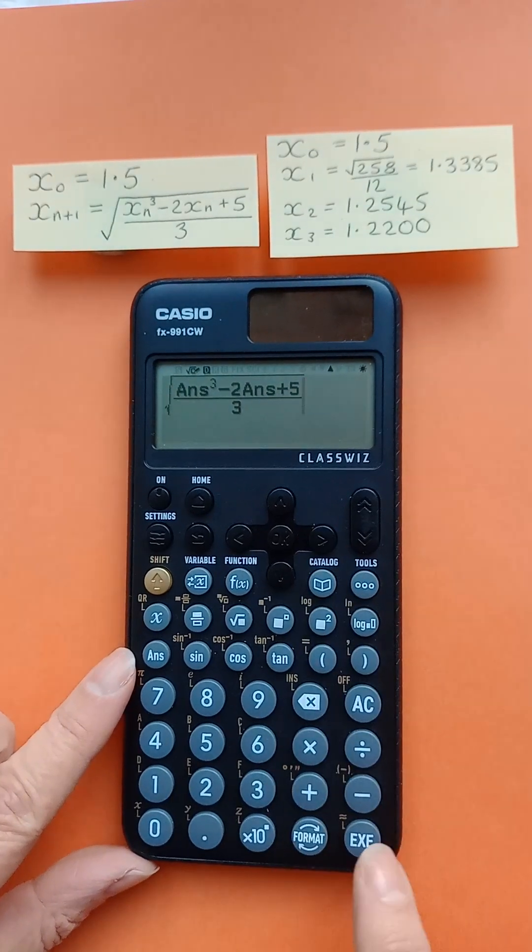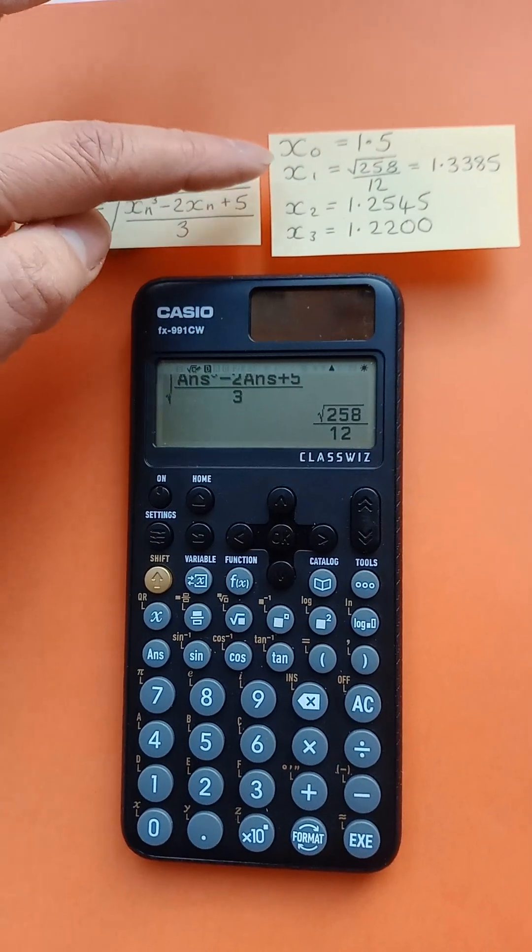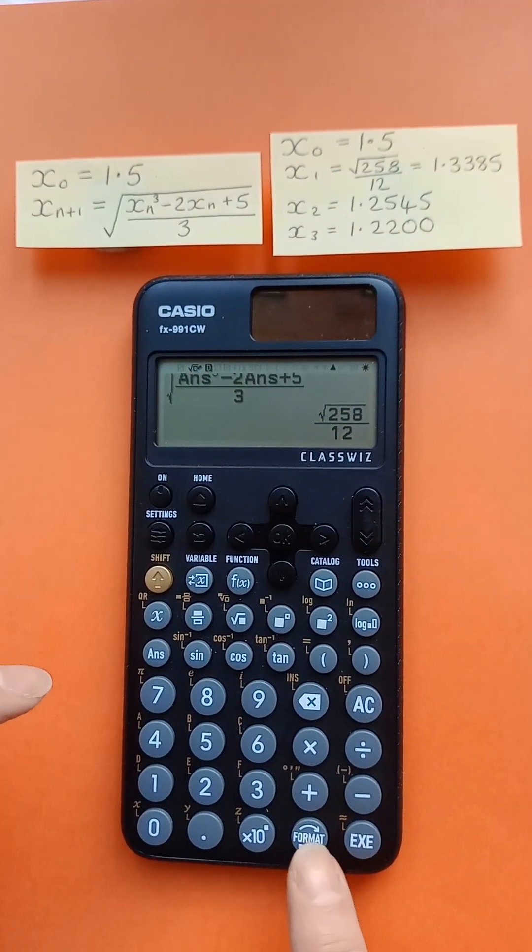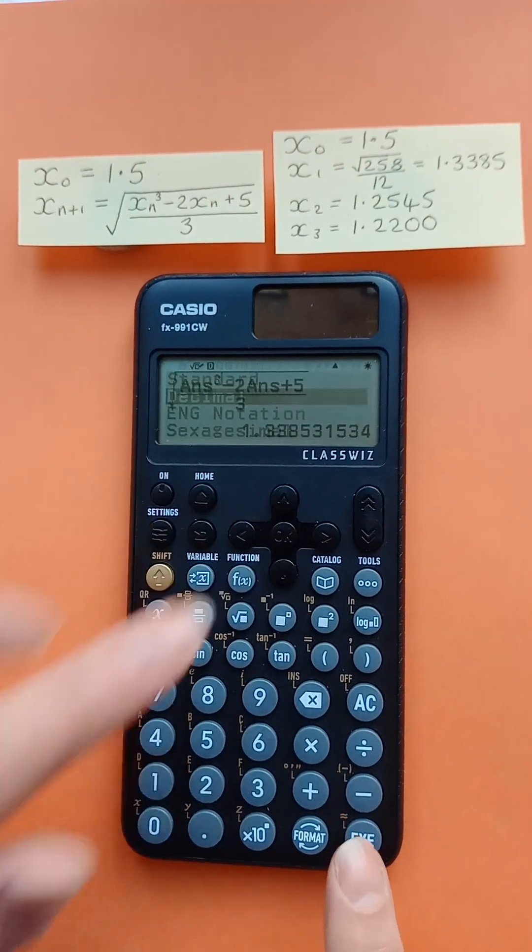Right, press execute and that gives us x1. We can change it to decimal obviously. Format decimal.